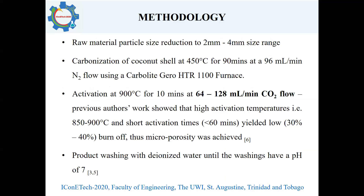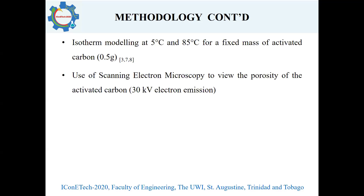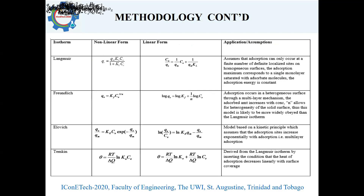Once the product is made, it is allowed to cool and then washed with deionized water until the washings have a pH of 7. This is followed by isotherm modeling, which I conducted at 5 degrees Celsius and 85 degrees Celsius. Note that isotherm modeling was conducted previously for 25 degrees Celsius in the preliminary study presented at the ICOSI in Malaysia. I also used scanning electron microscopy to give a detailed picture of the pores developed in the activated carbon product.